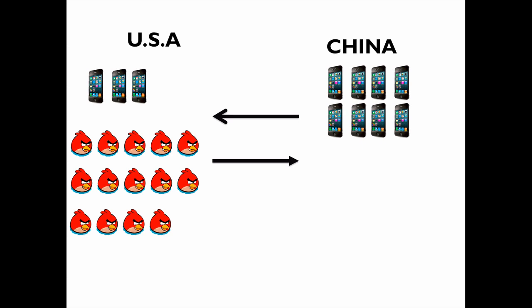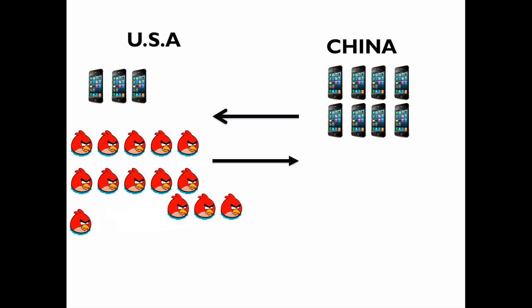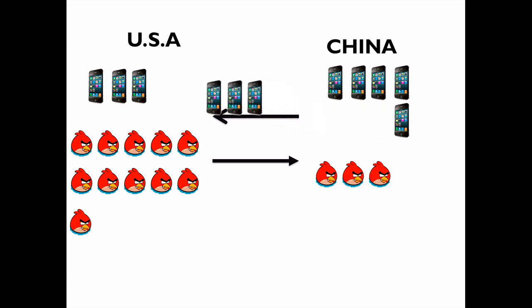So the total production is: the US produces three iPhones and 14 Angry Birds, and China produces six iPhones and no Angry Birds. Now for the trade — one trading scheme could be that the US gives China three Angry Birds in exchange for three iPhones.